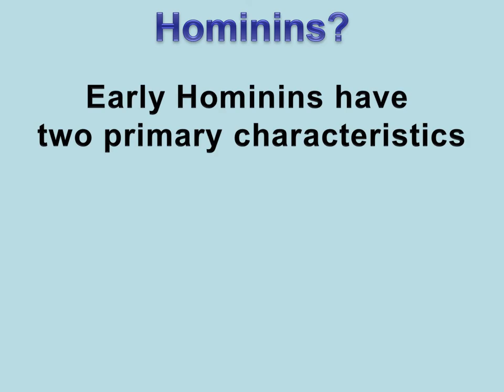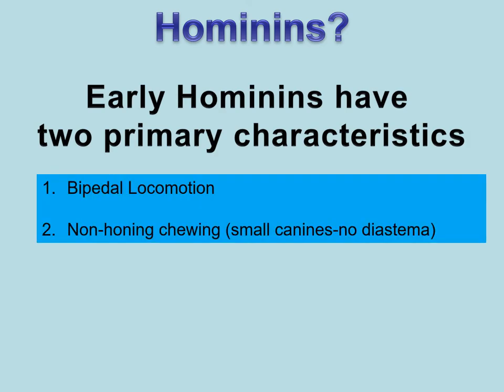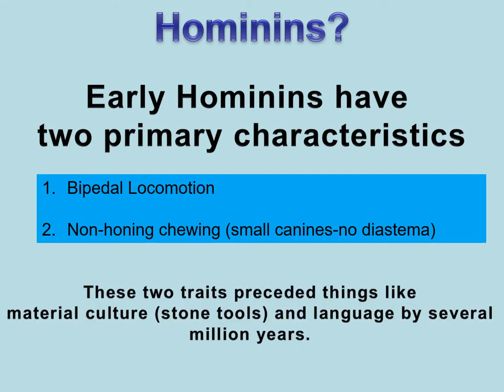How do we define what is a hominin? Our early hominids have two primary characteristics: morphological traits indicating bipedal locomotion, and non-honing chewing — meaning very small canines and no, or a very small, diastema. We're looking at a reduction in canine teeth over time. These two traits preceded material culture and language by several million years — they are the first steps towards becoming human.